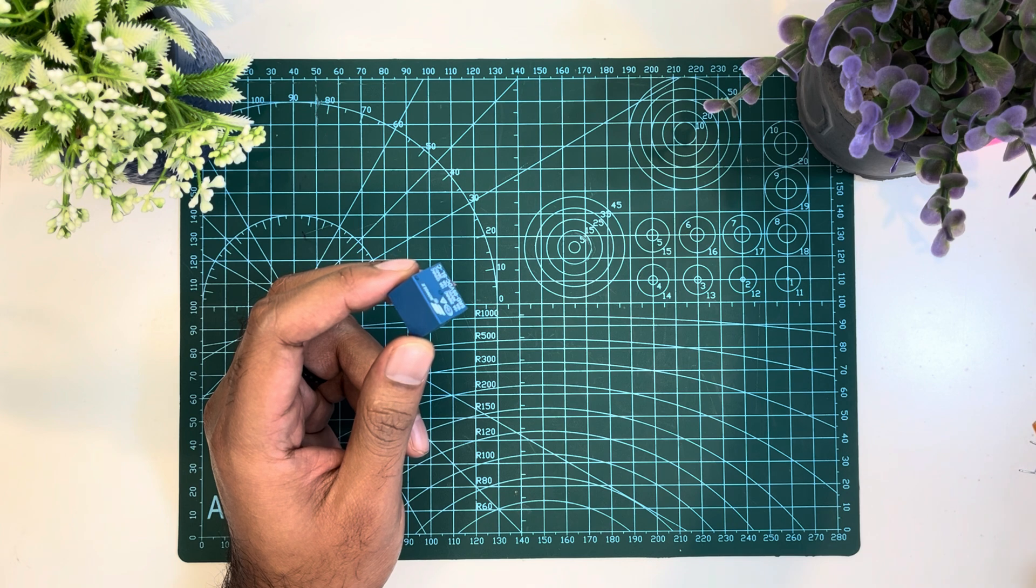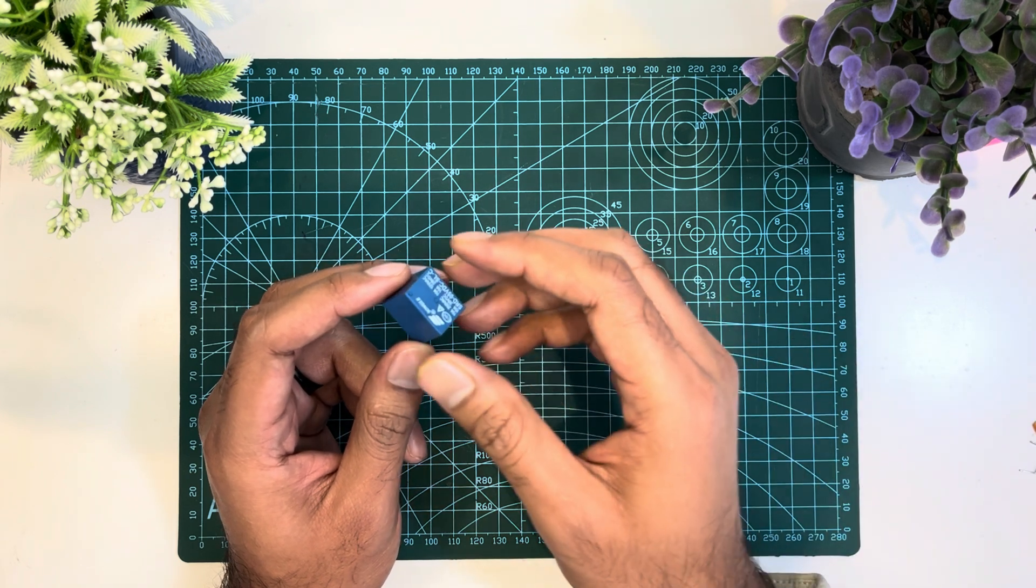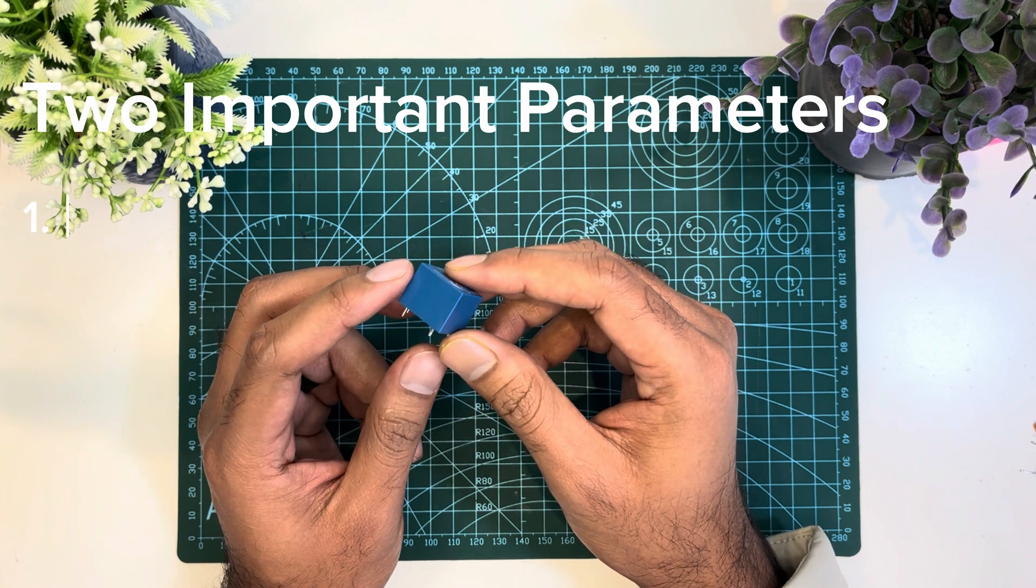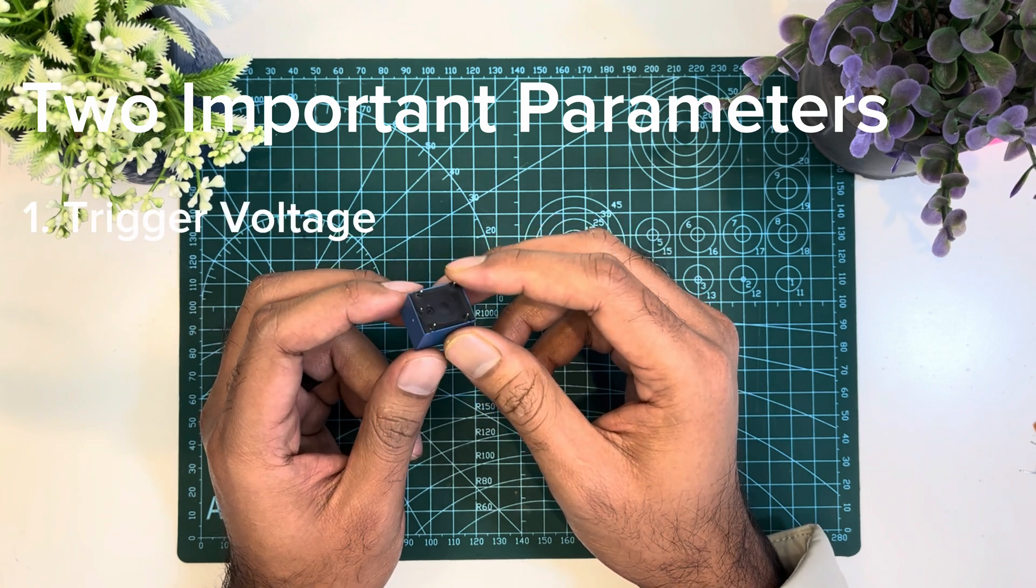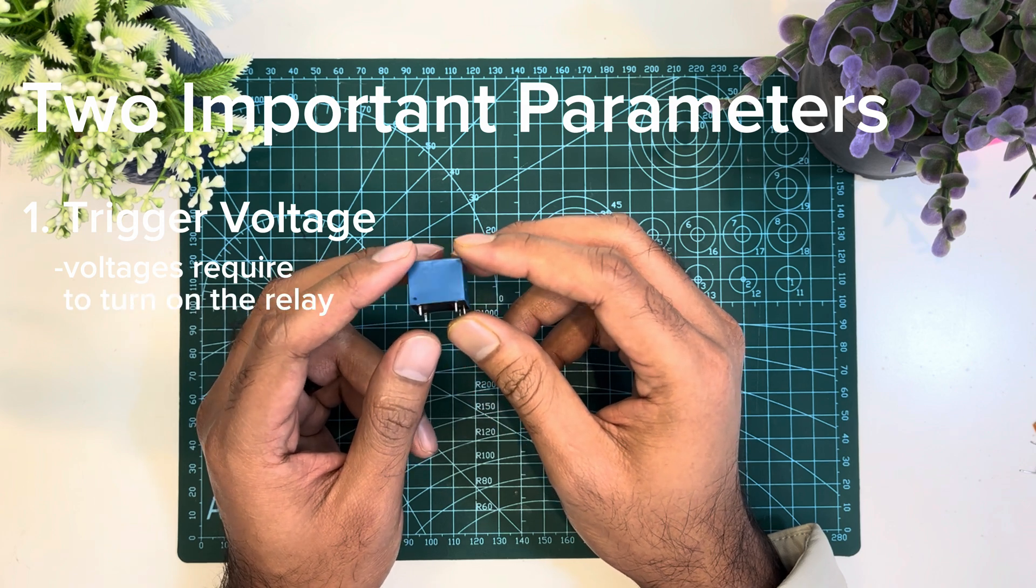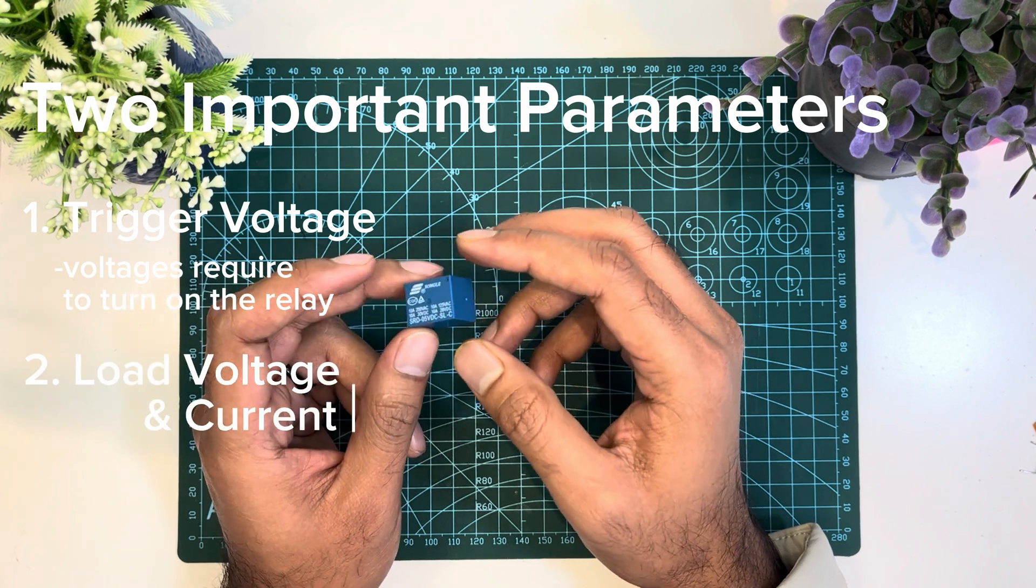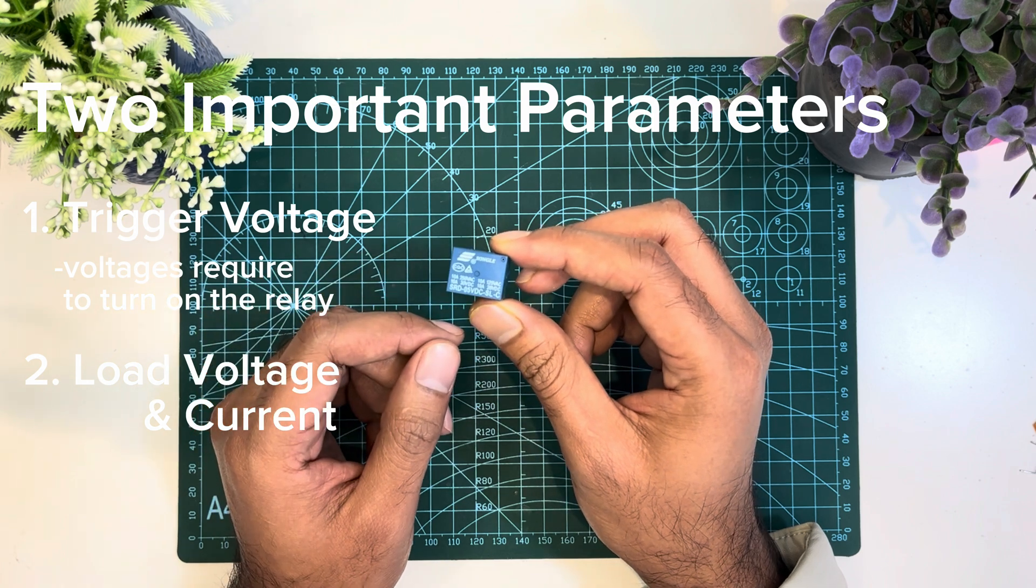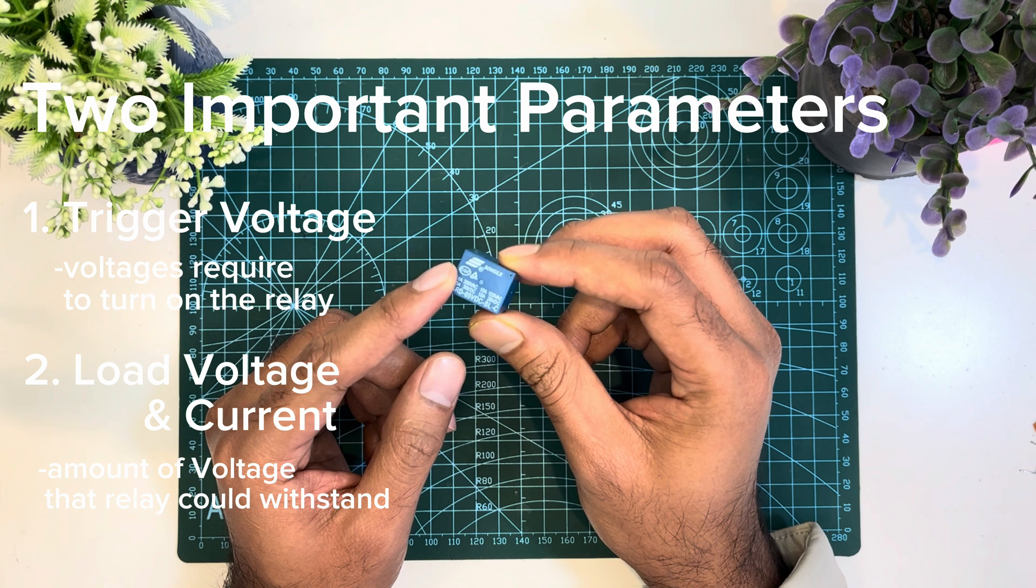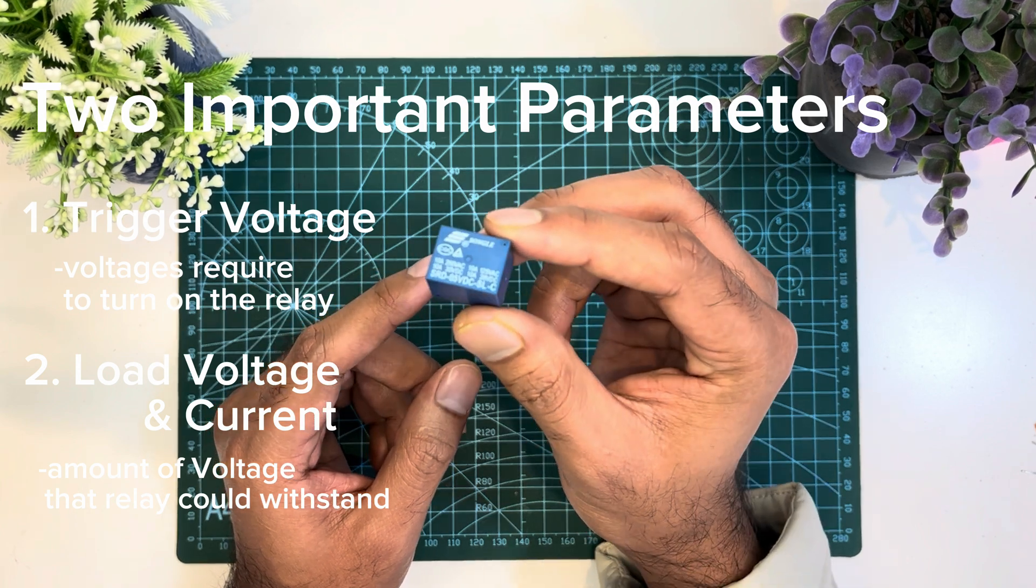Before we proceed with the circuit to drive the relay, we have to consider two important parameters. One is trigger voltage, which is the voltage required to turn on the relay. The other parameter is load voltage and current, which is the amount of voltage and current that our relay can handle. Usually these two parameters are written on the body of the relay.